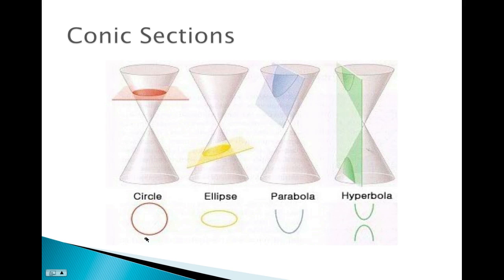There are four specific types of figures you get when you intersect a plane with a cone. The first is a circle — when the plane is parallel to the end of the cone, you get a circular figure. The second is an ellipse — when you tilt the plane slightly but it still goes completely through one cone. The third is a parabola — when you tilt the plane but it only goes through part of the cone, not slicing it completely.